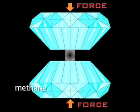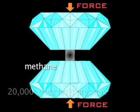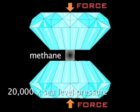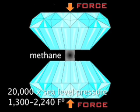Using a diamond anvil cell and a laser heat source, the scientists subjected methane to pressures exceeding 20,000 times the air pressure at sea level. The methane was heated to temperatures from 1,300 to over 2,240 degrees Fahrenheit. These conditions are like those found 40 to 95 miles inside the Earth.